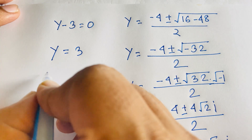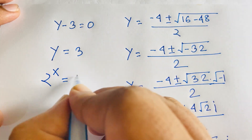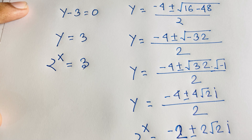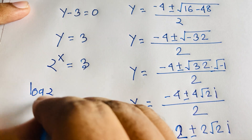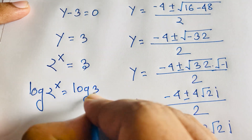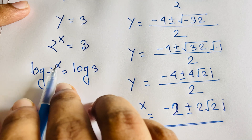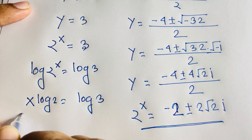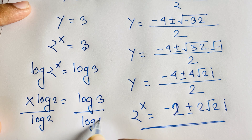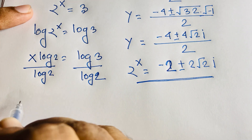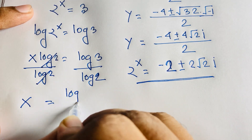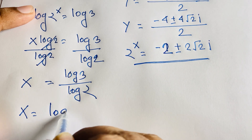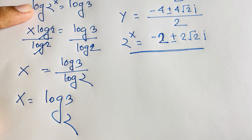Recalling that y = 2^x, we have 2^x = 3. Taking the natural log of both sides: log(2^x) = log(3). By logarithm rules, x·log(2) = log(3). Dividing both sides by log(2): x = log(3) / log(2), which equals log base 2 of 3. So our final answer is x = log₂3.